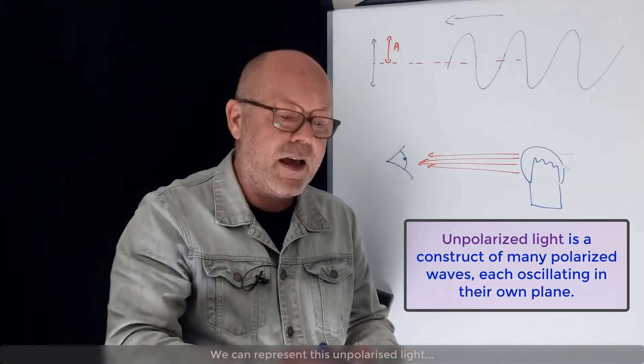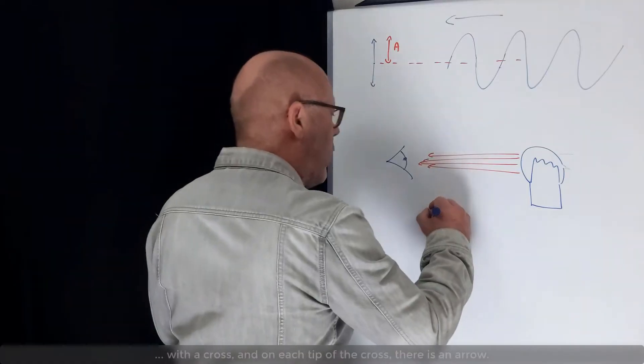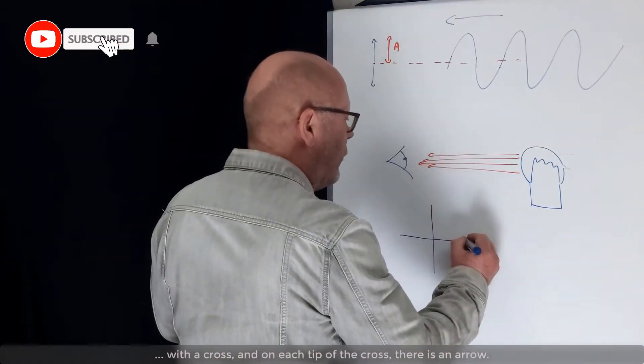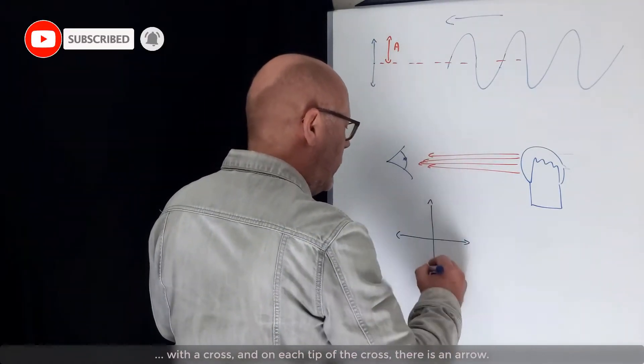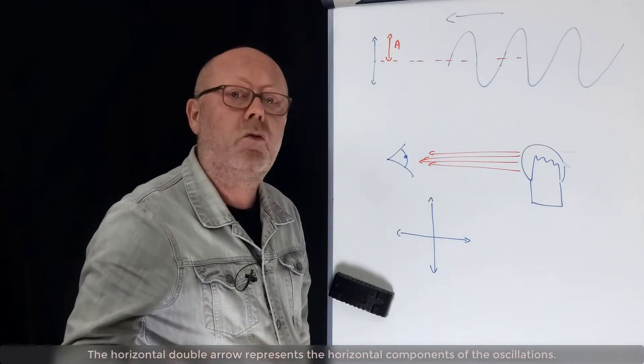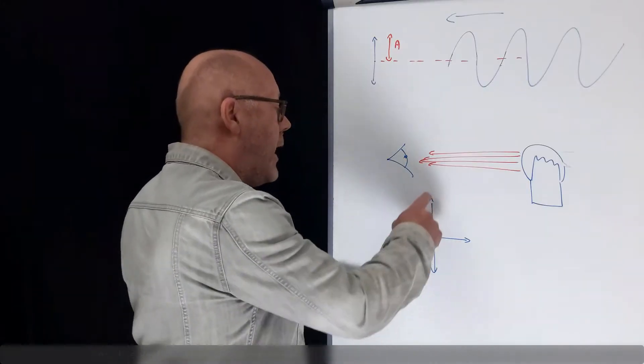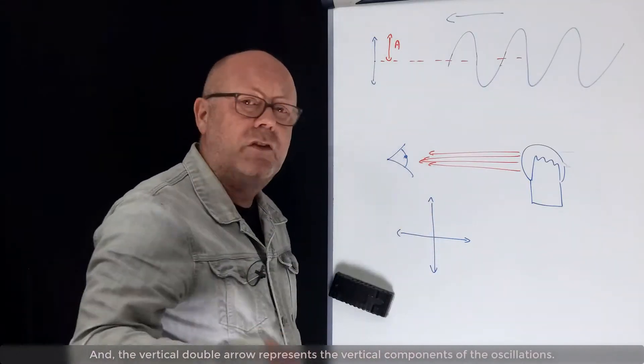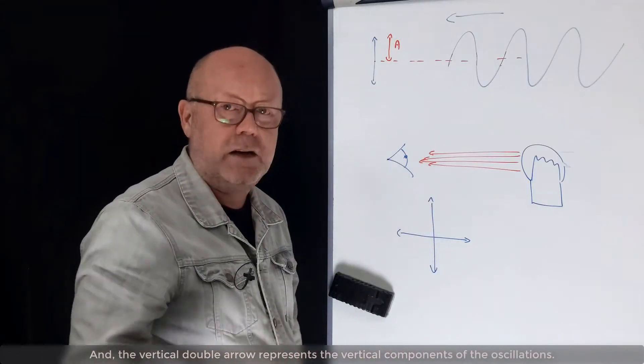We can represent this unpolarized light with a cross, and then each tip of the cross there is an arrow. The horizontal double arrow represents the horizontal components of the oscillations, and the vertical double arrow represents the vertical components of the oscillations.